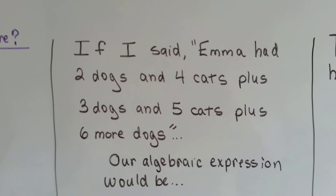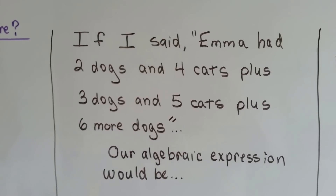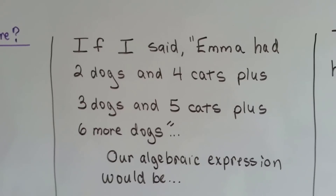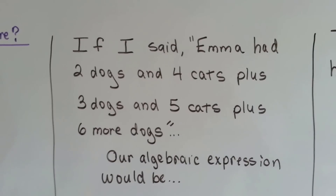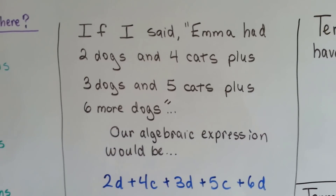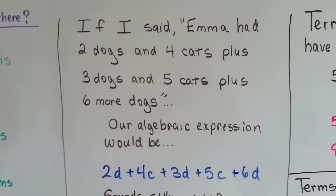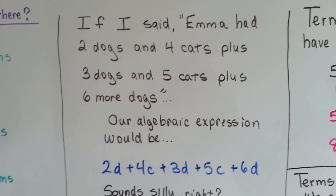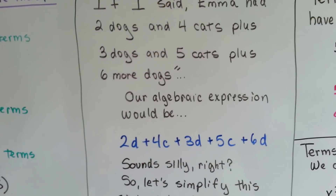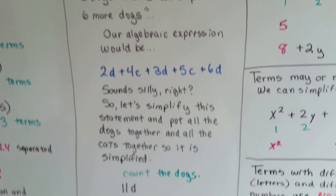If I said, Emma had two dogs and four cats plus three dogs and five cats plus six more dogs, you would say, why are you talking crazy? Why are you splitting them all up like that? That needs to be simplified. Our algebraic expression would be, if d is dogs and c is cats: 2d plus 4c plus 3d plus 5c plus 6d. Sounds silly, right? It's all mixed up. So let's simplify this statement and put all the dogs together and then put all the cats together, so it's simpler. It's simplified.